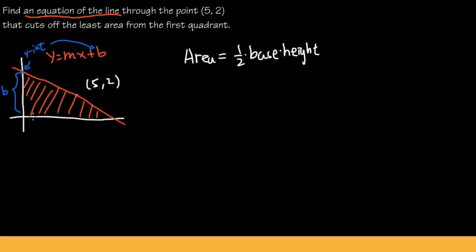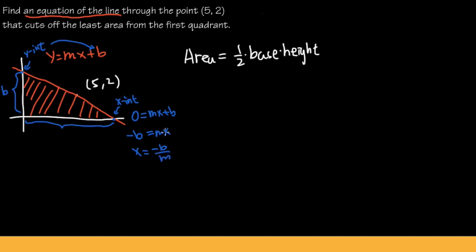Now let's find the base of the triangle. The line crosses the x-axis at the x-intercept. To find the x-intercept, we set y = 0: 0 = mx + b, so negative b = mx, and dividing both sides by m gives x = -b/m. So the base of our triangle is -b/m.